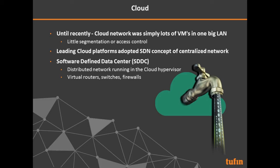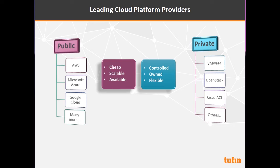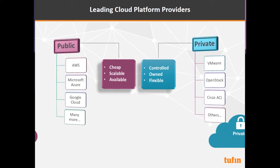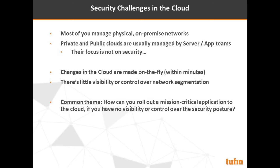Here are some of the leading cloud providers. Public cloud — AWS, Azure, Google and others — is cheap, available, and scalable, but not owned by you. Private cloud — VMware NSX, OpenStack, Cisco ACI — is something you own and control, flexible but much more expensive. A lot of organizations are using a mix of the two, which is the hybrid cloud.